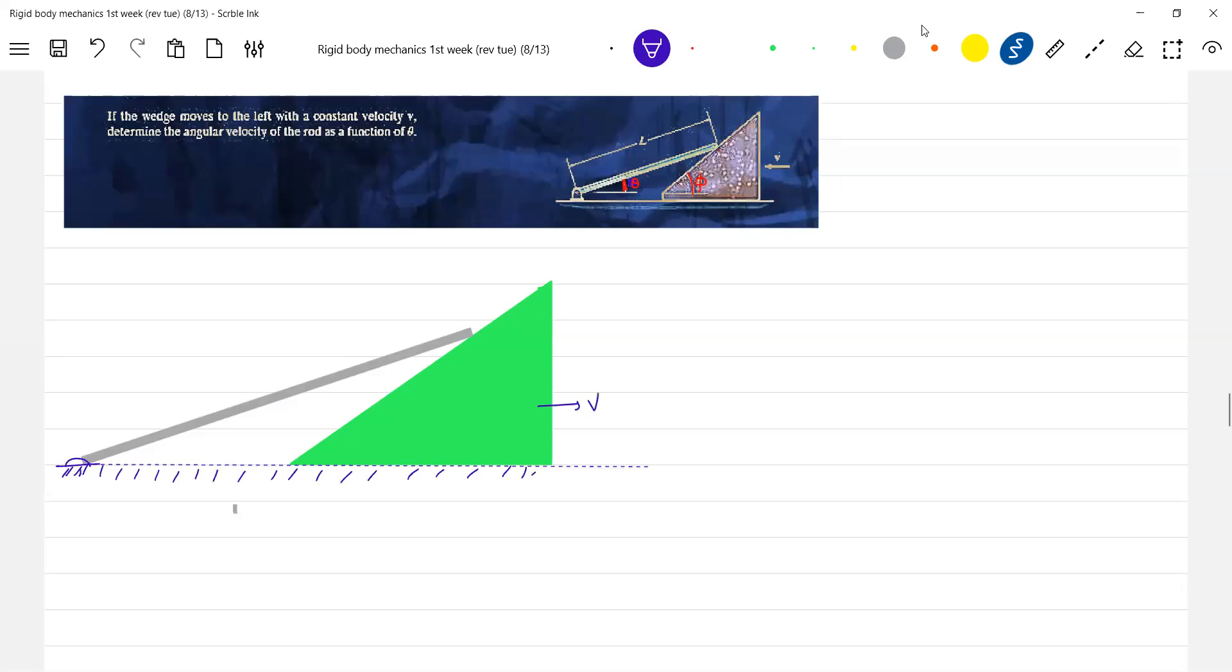Let me make this a little bit easier for you. Theta is this angle, phi. The length of the rod is l. We're asking for the angular velocity. So the angular velocity of the rod will come.